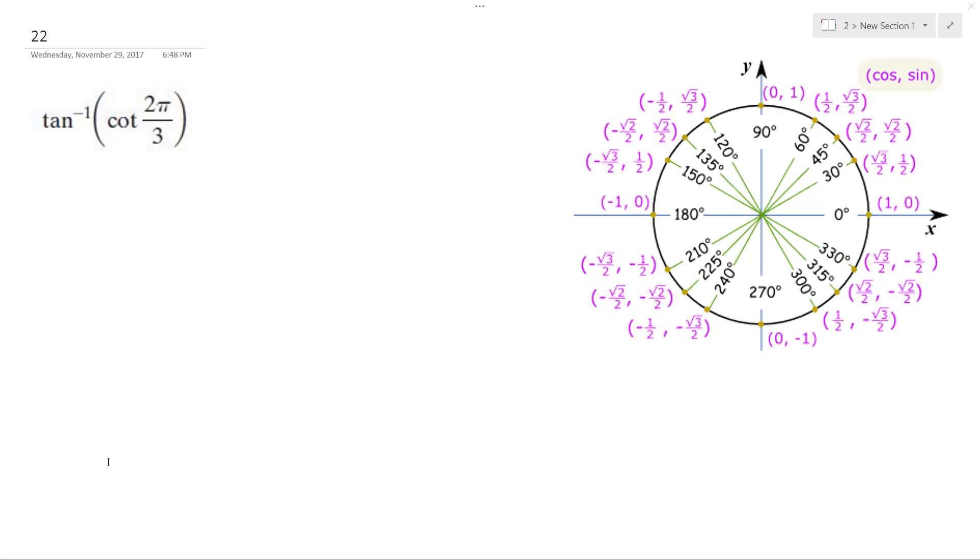Let's find the inverse tangent of the cotangent of 2π over 3. 2π over 3 is 120 degrees, so we end up with cotangent.